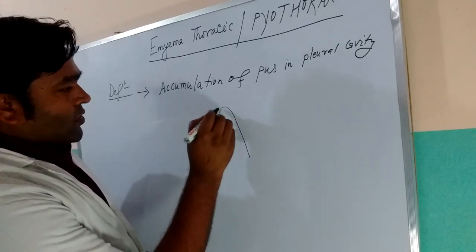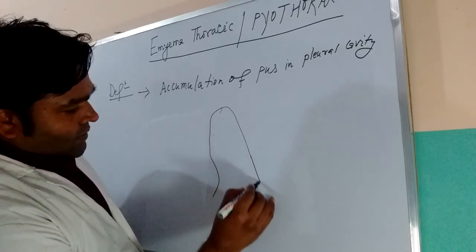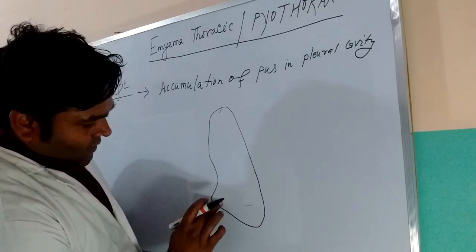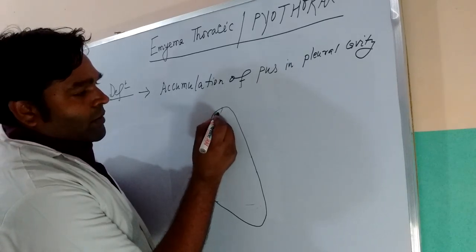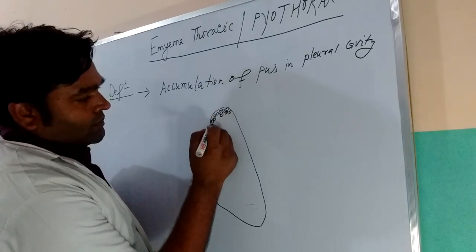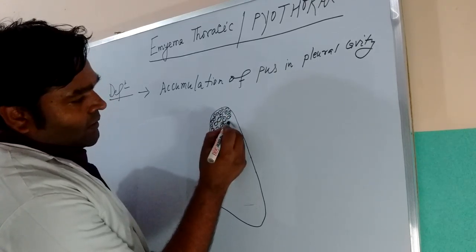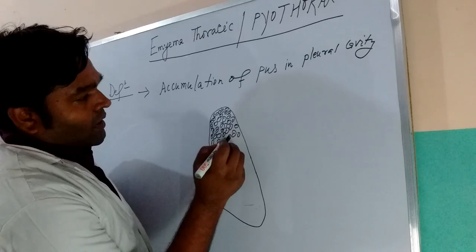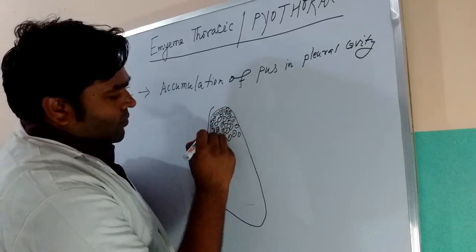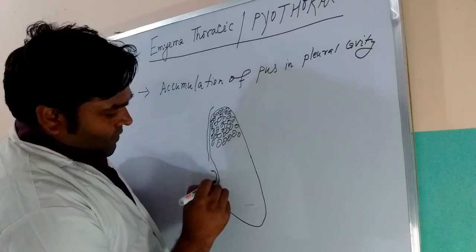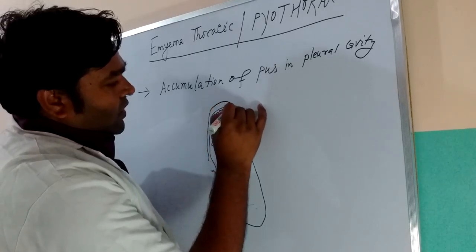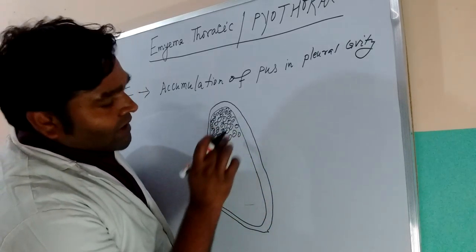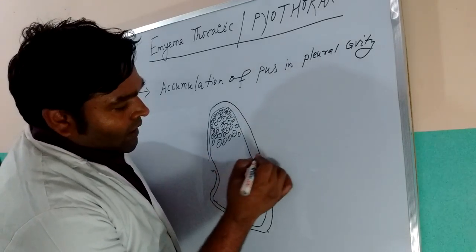Suppose this is the left lung. Lungs are made up of multiple alveoli. There is pleura, which has two layers: one is the visceral layer of the pleura and one is the parietal layer of the pleura. The visceral layer is attached to the parenchyma of the lung.